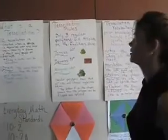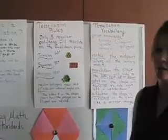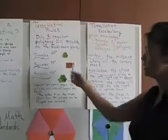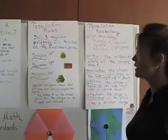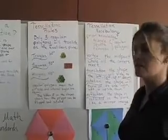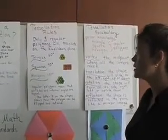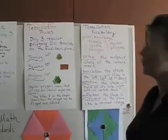Let's move over to the rules of tessellation. Only three regular polygons will actually tessellate on the Euclidean plane: triangles at 60-degree angles, squares at 90-degree angles, and hexagons at 120-degree angles. Now regular polygons mean that all sides and internal angles are equal.